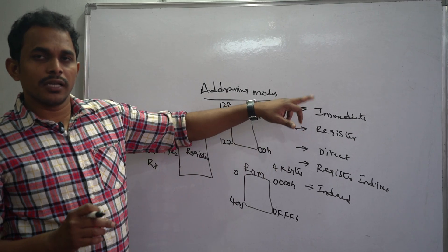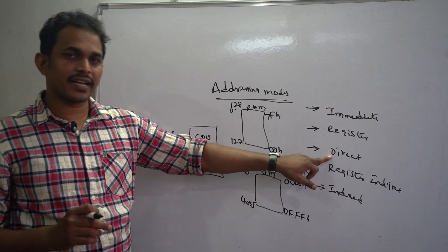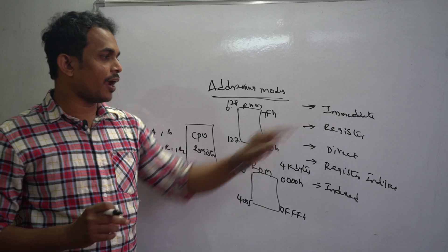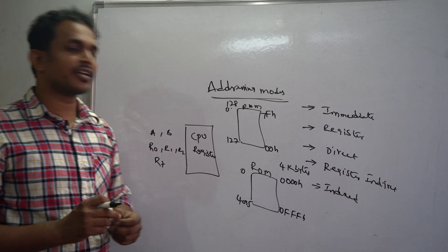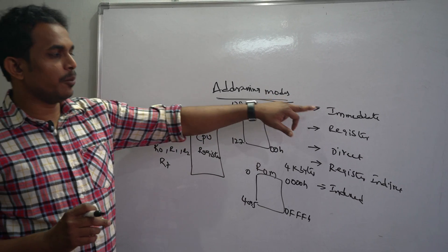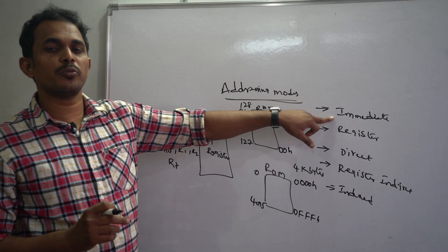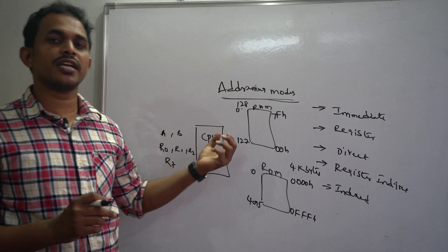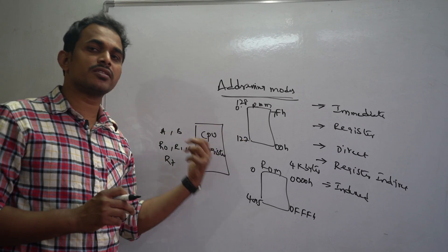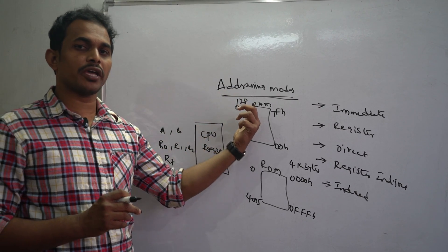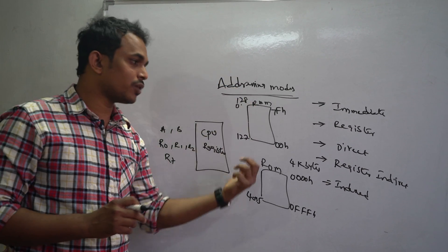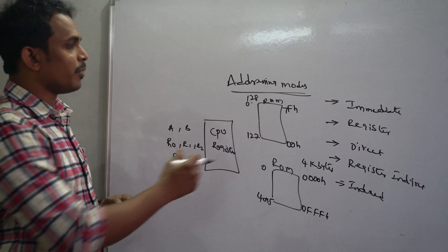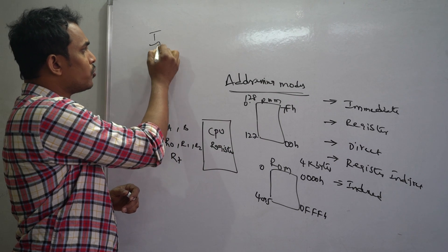These are the five addressing modes the device supports: immediate, register, direct, register indirect, and indexed. The immediate addressing mode is used to store a constant value into a register or into a memory location.